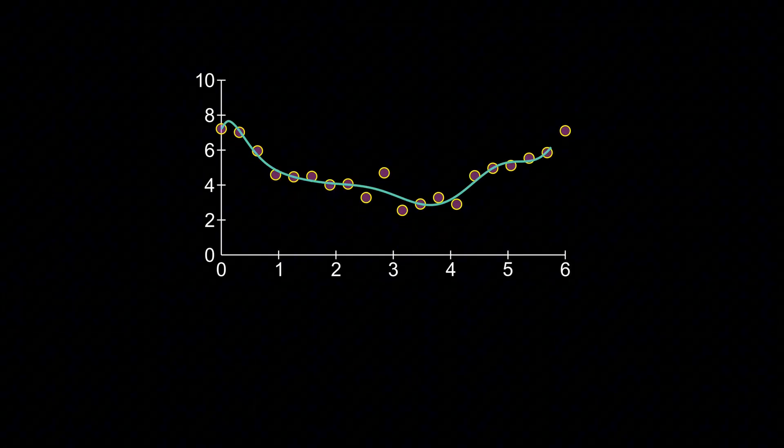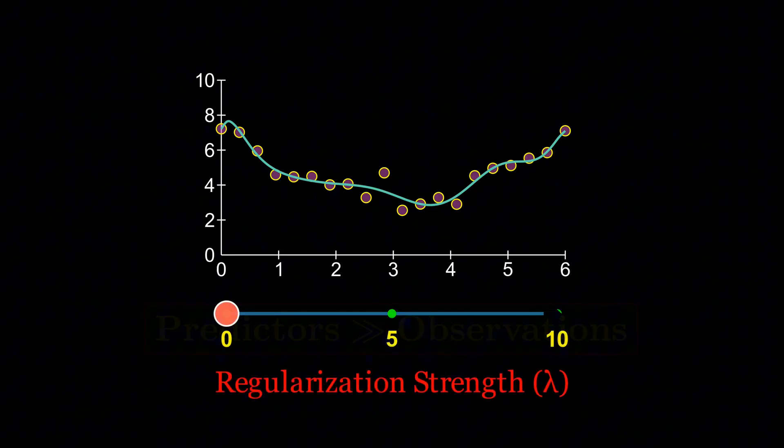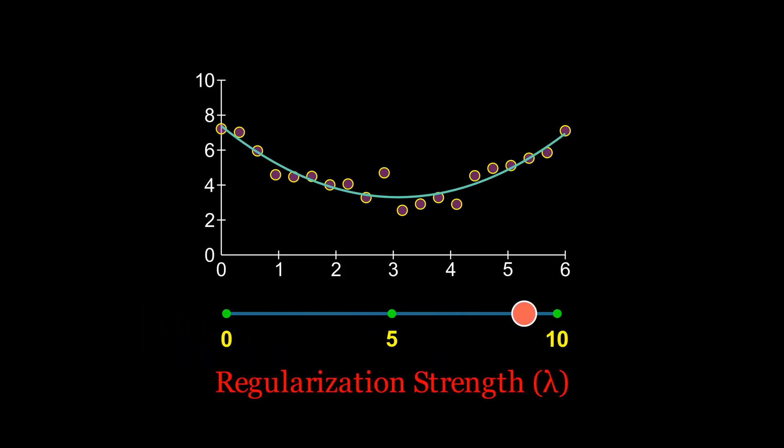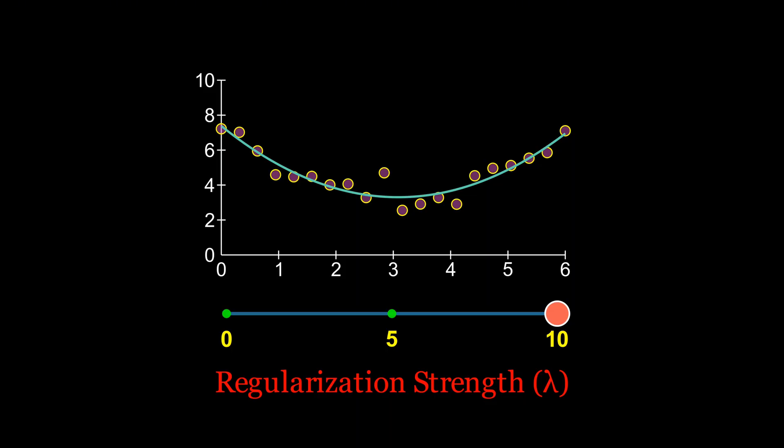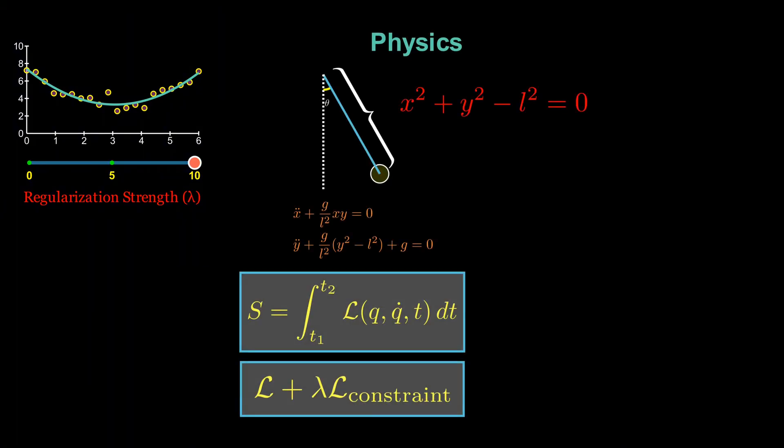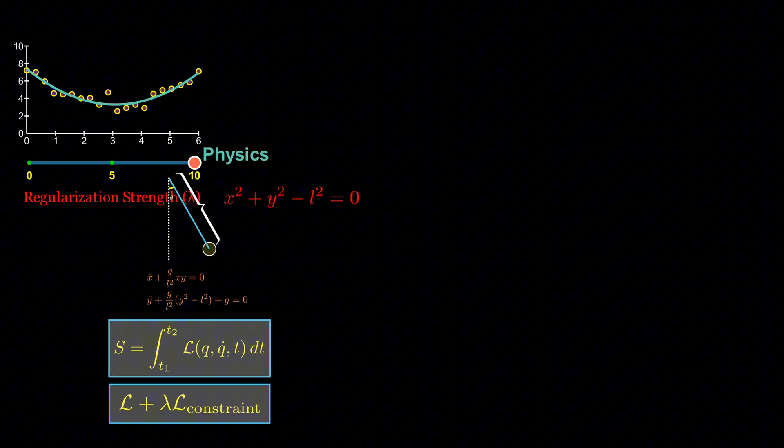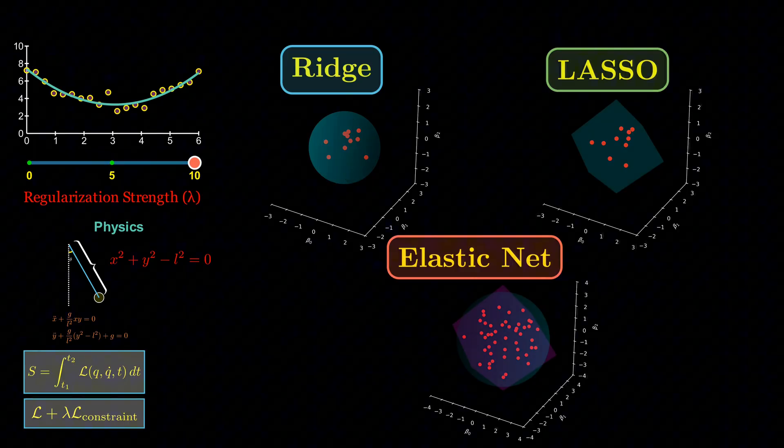So let's tie this all together. Overfitting is the problem of too many parameters chasing too little data. Regularization is the solution, born directly from assigning probability distributions to parameters. The penalties we add are the familiar Lagrange multipliers from physics. And the methods, ridge, lasso and elastic net, are simply different ways of constraining parameter space.